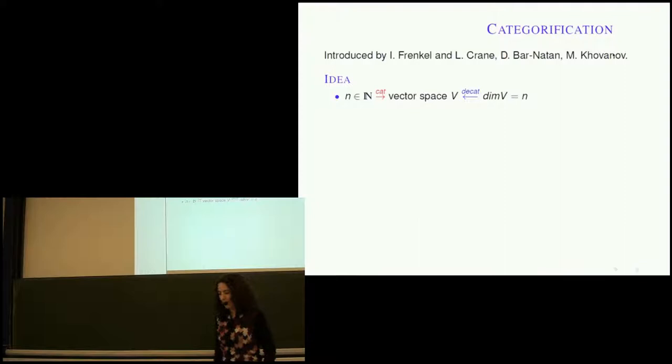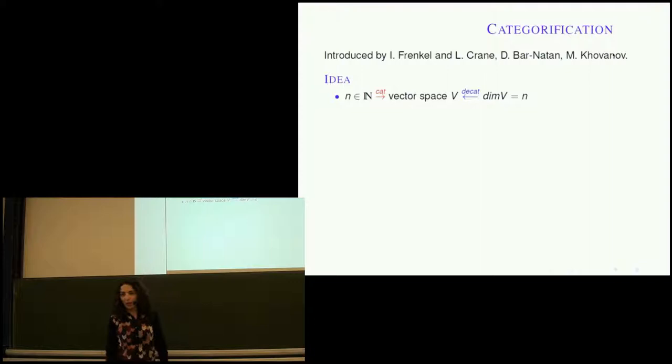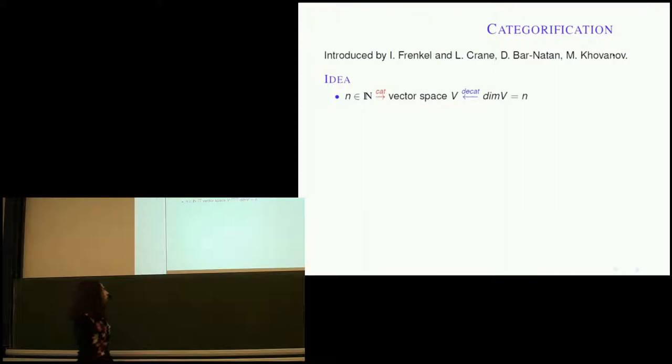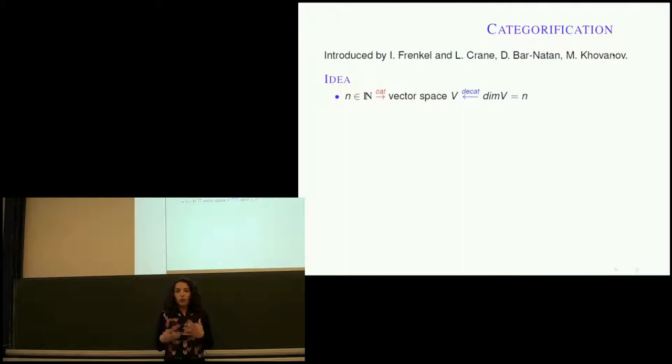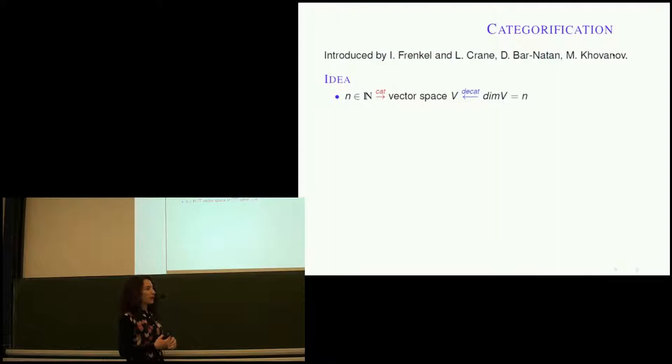Here's a slide I probably should have given you on Monday. Categorification existed in mathematics, just not under this name. As I explain it, you'll probably come up with examples of your own that were not known under that name. It was introduced by Louis Crane and Igor Frenkel and later popularized by Dror Bar-Natan and Mikhail Khovanov. I'm going to give a very simple example because I don't know a formal definition — so it's a definition by example and not all-inclusive.